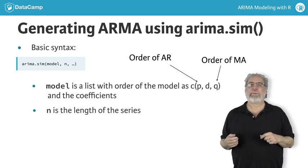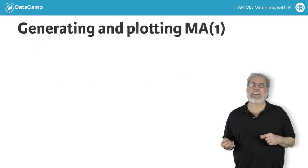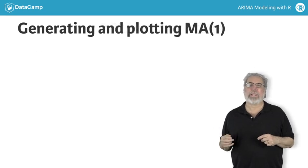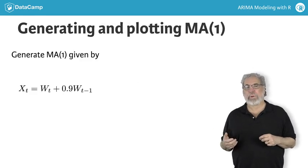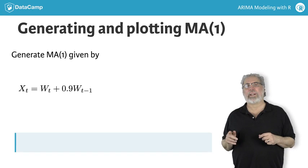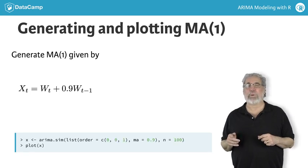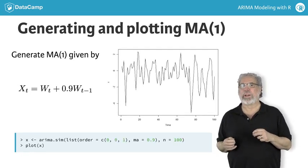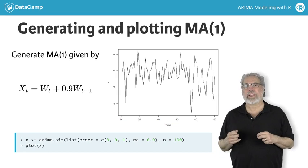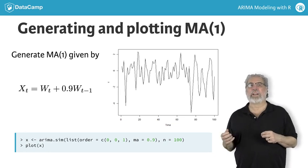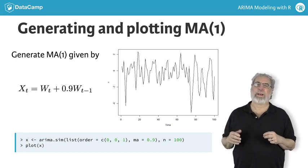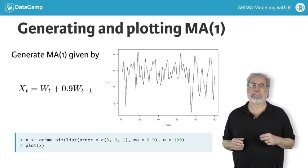For example, to generate data from an MA(1) with parameter 0.9, specify the model as a list with order equals 0, 0, 1 and MA equal to 0.9. In this case, we'll generate 100 observations.